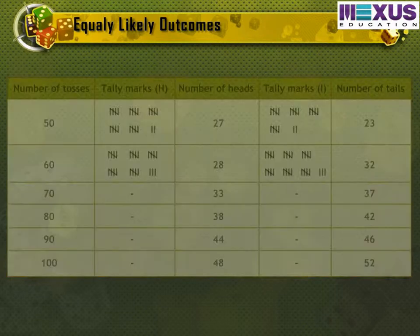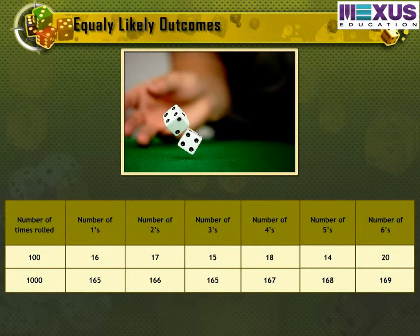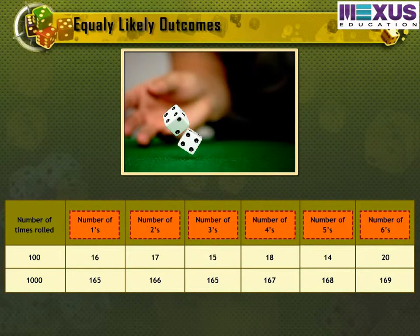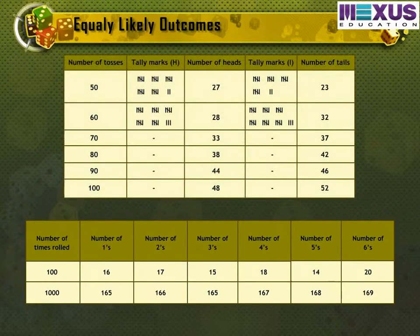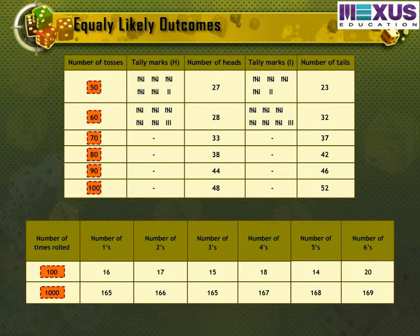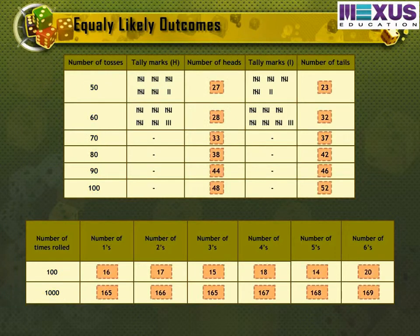Similarly, if we perform such an experiment with a dice for 100 times or more, we'll observe that the number of each of the six outcomes becomes almost equal to each other. In such cases, we may say that the different outcomes of the experiment are equally likely. This means that each of the outcomes has the same chance of occurring.